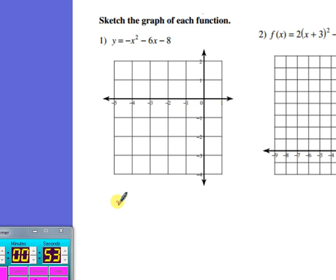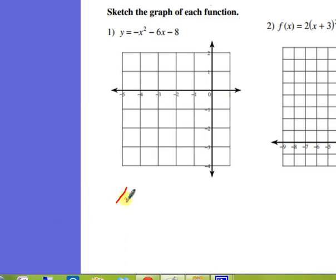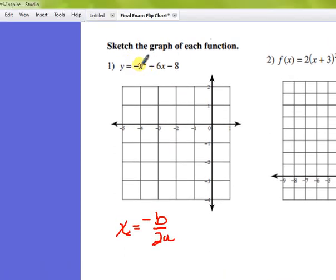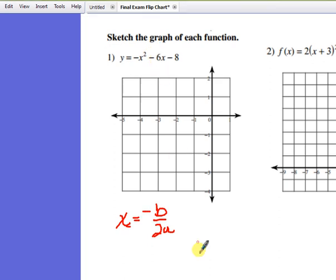To find the vertex of a graph in standard form, you want to use the formula negative b over 2a. You have to know the values of a and b. As I look up here, I see that a is negative 1, and b is negative 6.